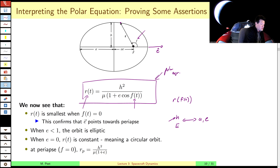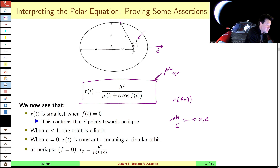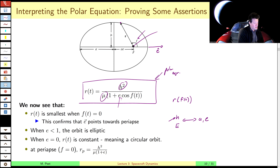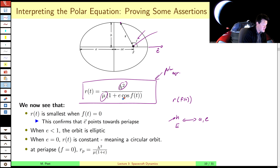Before we get to a whole bunch of useful equations helpful for doing homework, we'll take a brief moment and verify some assertions made earlier in the lecture. Once you have the polar equation, these are really quite simple. Looking at this expression, it's very clear to us — at least when e is less than one — what the smallest value of r is. When is the radius smallest as measured from the focal point of the ellipse?